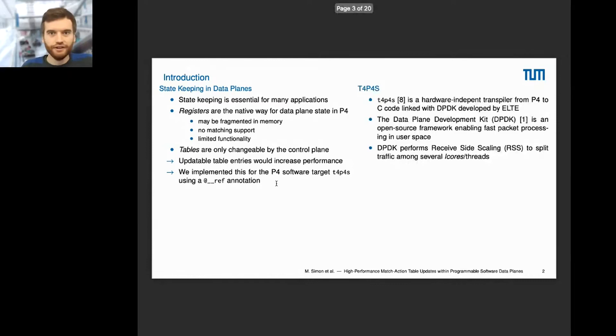TAPAS is a hardware-independent transpiler transpiling P4 code to C. This code is then linked with DPDK. The Data Plane Development Kit is a framework bypassing the Linux network stack and directly enabling fast packet processing in user space, therefore having much higher throughput and lower latency. DPDK can perform receive-side scaling, meaning incoming traffic is split according to the five-tuple of destination source IPs and ports. These are split and matched to several logical cores or threads which can independently and in parallel process the packets through the P4 pipeline.